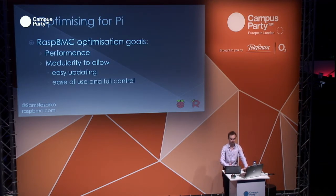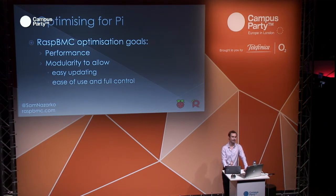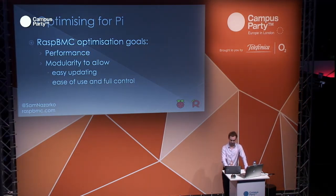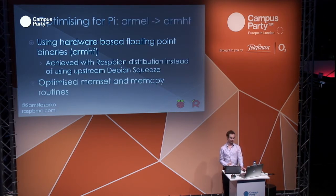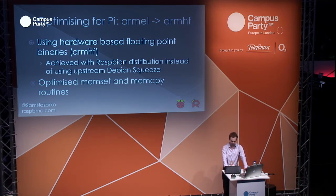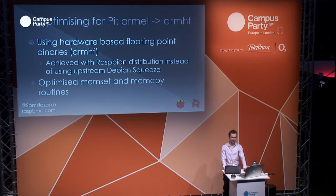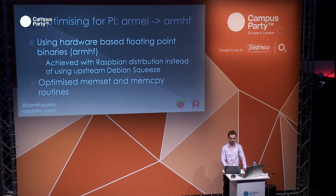When optimizing for Pi, I was looking at performance and modularity, because modularity is key in the user experience. The first case is to use the Raspberry Pi's hardware floating point capabilities. Originally I started with Debian Squeeze and software floating point — it's okay, but you really start to see the advantage of hardware-based floating point with DTS decoding in software, for example. There are also optimized memset and memcpy routines specific to Raspberry Pi and the ARM architecture.